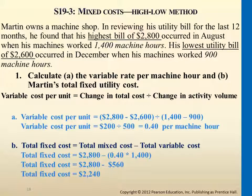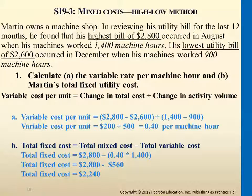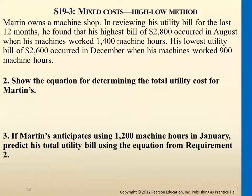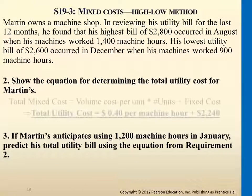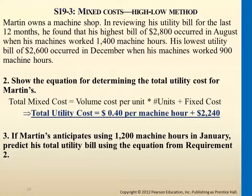Then take that slope and plug it in with any data point to figure out the total variable cost, and subtract from the total cost to find the fixed portion. If you were to plot this on a graph, this portion here is the fixed cost — no matter how many hours the machine has been used, you will incur this cost of $2,240. The purpose of doing this is that we want to find a way to do budgeting for these types of costs.